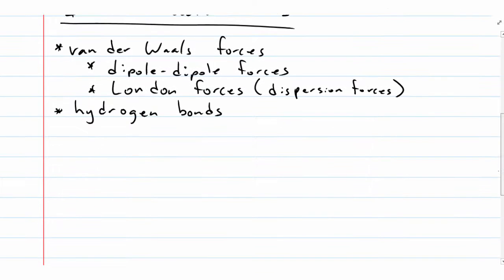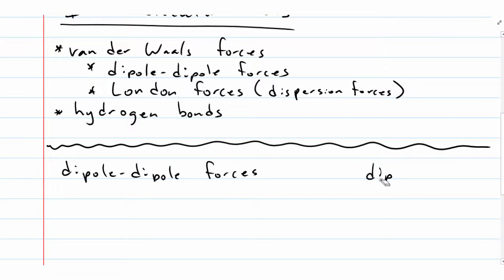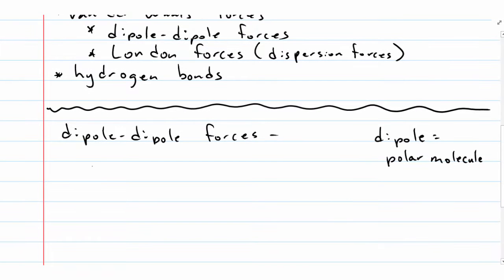We're going to start by looking at dipole-dipole forces. If we analyze the word 'dipole,' it implies something comprised of two poles — that's polarity. It's going to be a polar molecule, something that has two poles. A polar molecule has a partially positive pole and a partial negative pole. So dipole-dipole forces are forces that act between polar molecules.